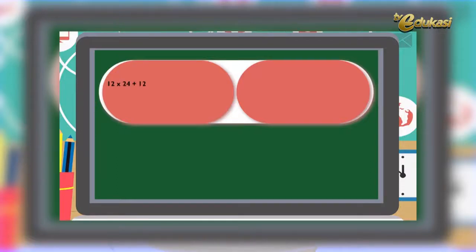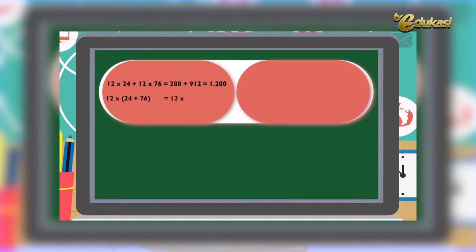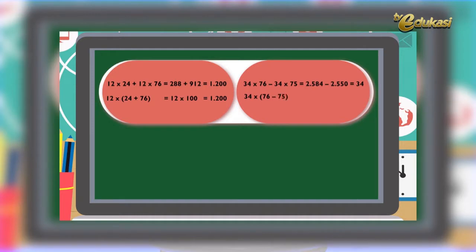Sekarang Bapak akan menerangkan pemahaman konsep tentang sifat distributif. Perhatikan penjelasan berikut ini. 12 dikali 24 ditambah 12 dikali 76 sama dengan 288 ditambah 912 sama dengan 1200. Ini bisa menjadi 12 dikali (24 ditambah 76) sama dengan 12 dikali 100 sama dengan 1200. Selanjutnya, 34 dikali 76 dikurangi 34 dikali 75 sama dengan 2584 dikurangi 2550 sama dengan 34. Ini menjadi 34 dikali (76 dikurangi 75) sama dengan 34 kali 1 sama dengan 34.